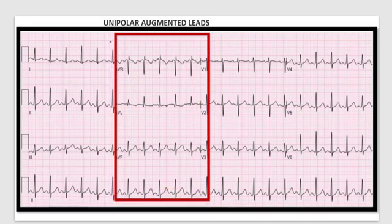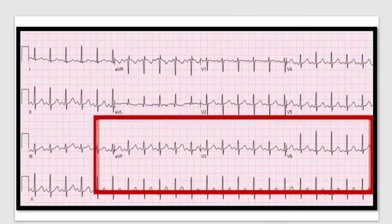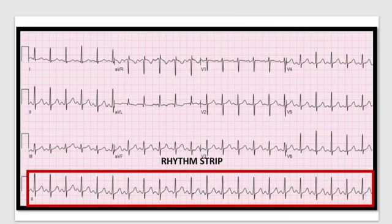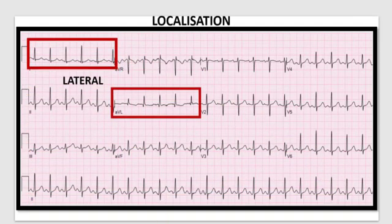On the right half of the standard ECG strip are six chest leads from V1 to V6. There is also a rhythm strip, which is usually lead 2. This helps to determine the rhythm and calculate the heart rate, especially if the rhythm is irregular. These leads help to localize the affected area of the heart, especially in cases of myocardial infarction, and give information about the most likely culprit vessel involved.